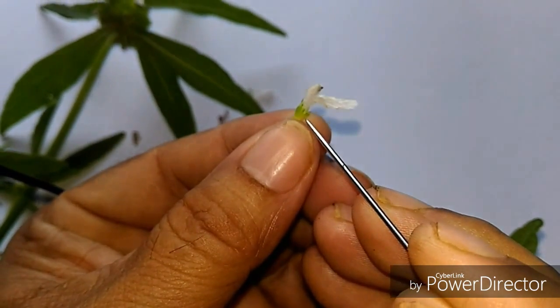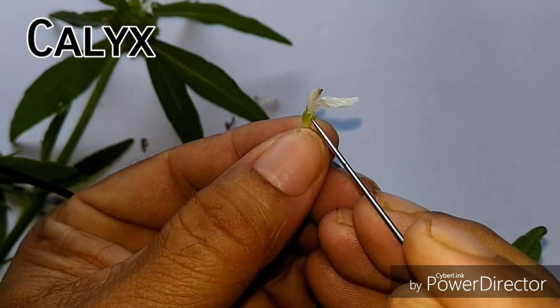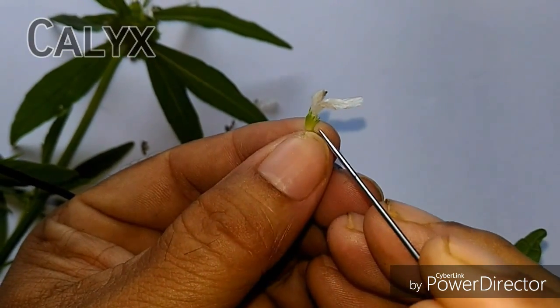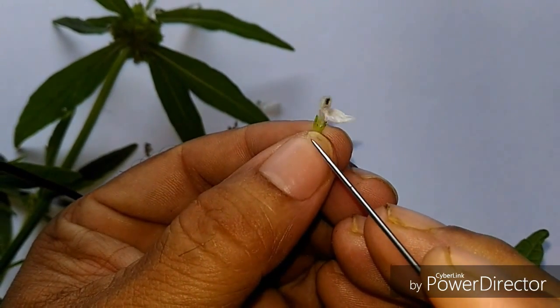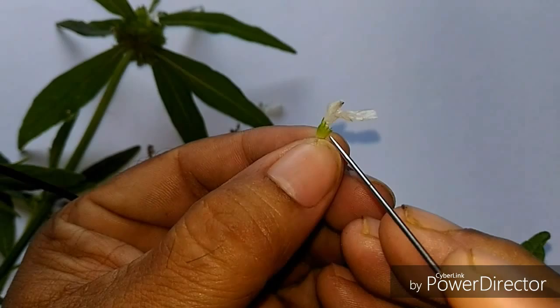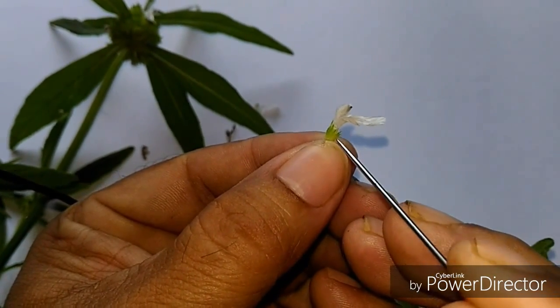So, these are the sepals. The number of sepals is five. And these sepals are united together to form a tubular structure. Hence, it is gamosepalous.